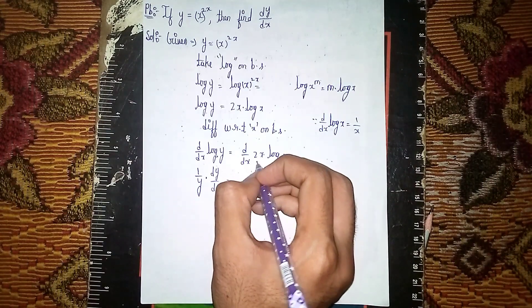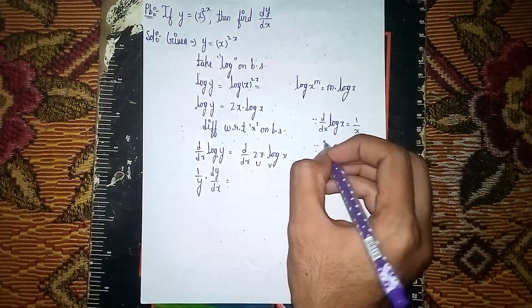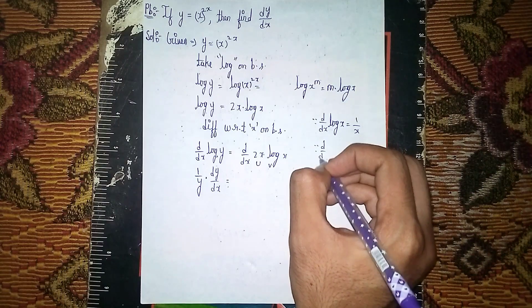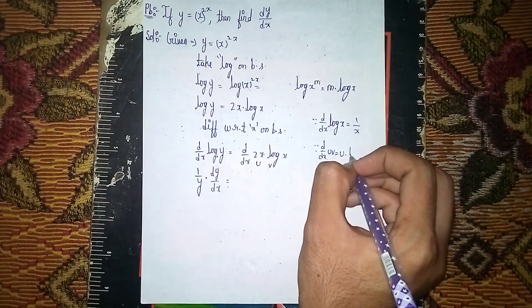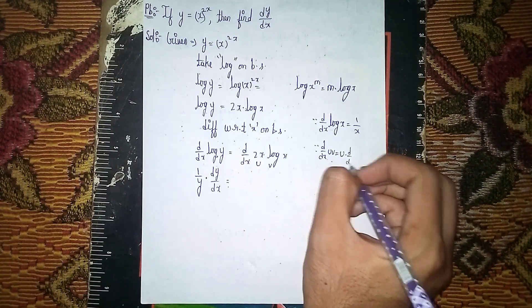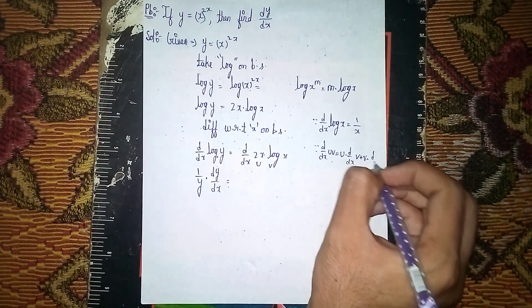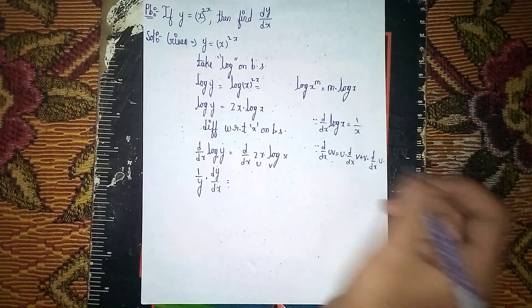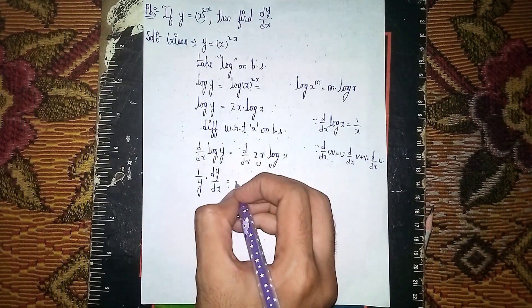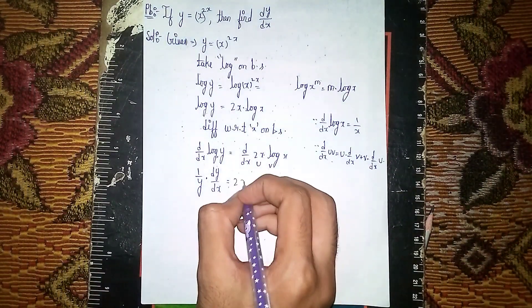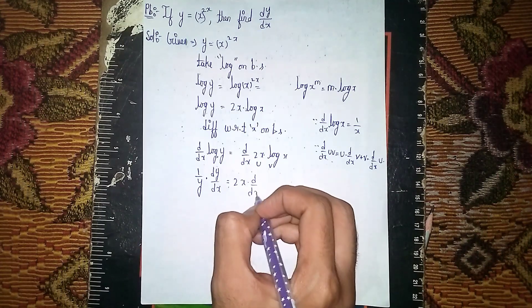On the right side we use the product rule. The product rule states: d/dx of uv is equal to u into d/dx of v, plus v into d/dx of u. Here u equals 2x and v equals log x.